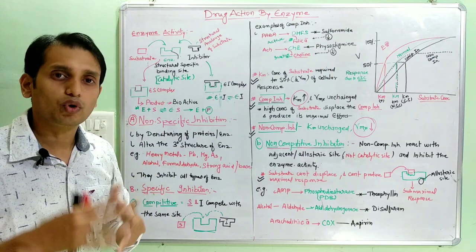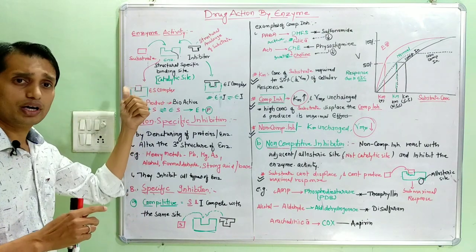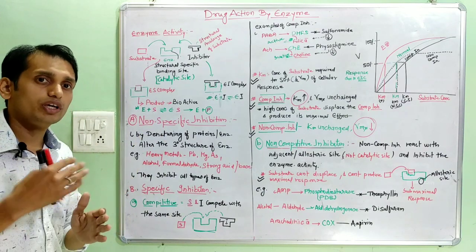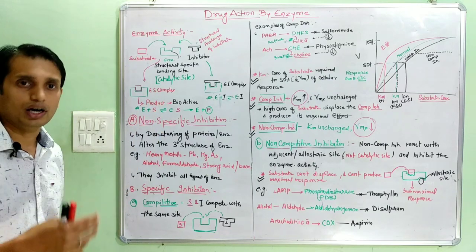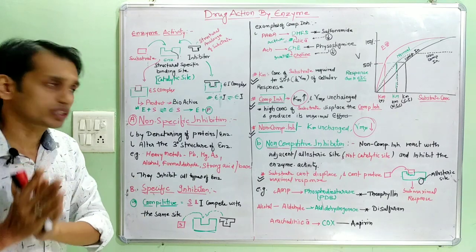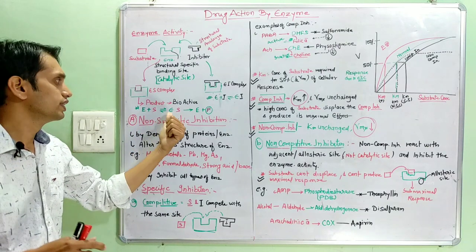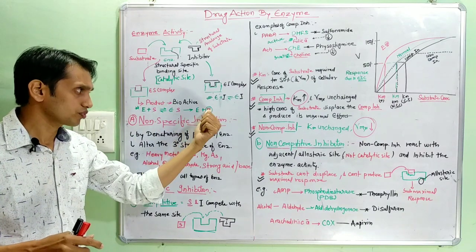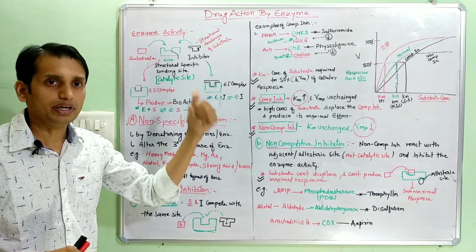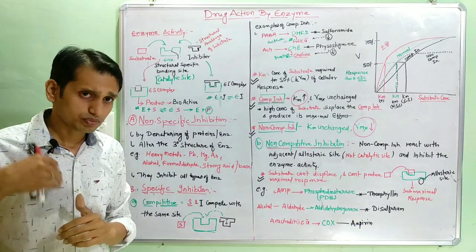Now let's talk about the effect produced. In the normal case, the substrate binds the enzyme and an ES complex is formed. After ES complex formation, a product is produced which is the main responsible for biological activity or biological response. But in the case of an inhibitor, the enzyme reacts with the inhibitor and forms an EI complex, which cannot produce any biologically active compound.